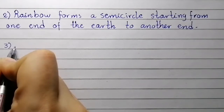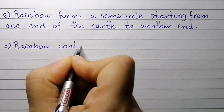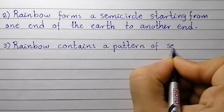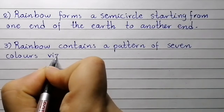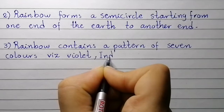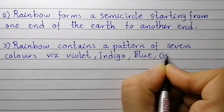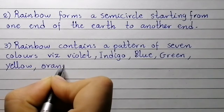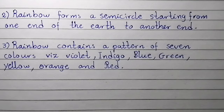Point number three: a rainbow contains a pattern of seven colors — violet, indigo, blue, green, yellow, orange, and red.